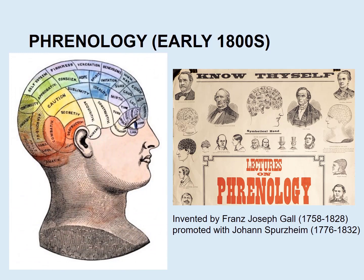Who came up with this theory of localization? It was the early phrenologists. Franz Josef Gall and Johann Spurzheim popularized this idea in the early 1800s. The phrenology head shows you specific human characteristics — personality traits — and the claim was that underneath the skull, those specific brain locations were responsible for those psychological traits.